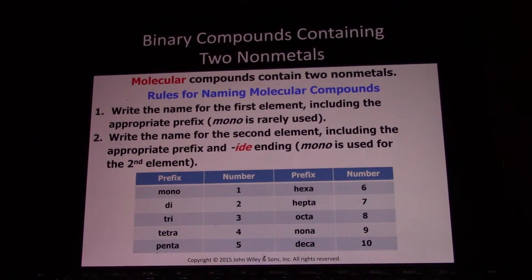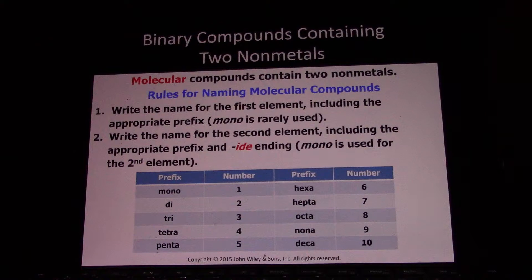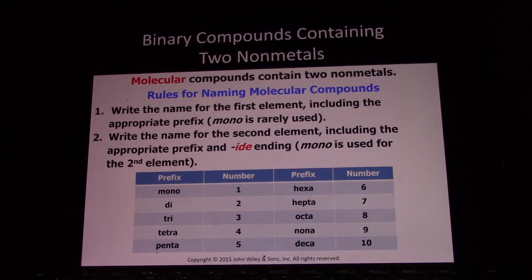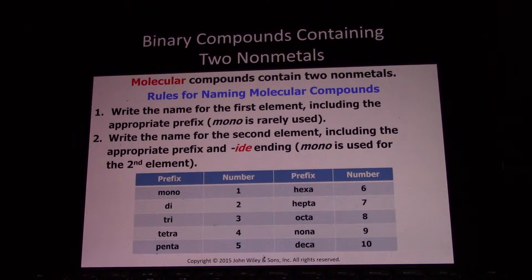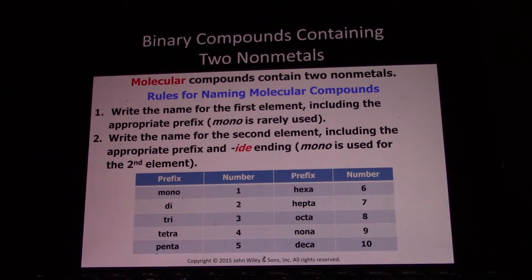The Greek prefixes are: mono is one, di is two, tri is three (like a tricycle), tetra is four (like a tetrapod), penta is five, hexa is six, hepta is seven, octa is eight (like an octopus), nona is nine, and deca is ten.